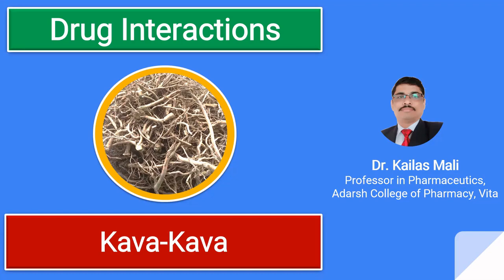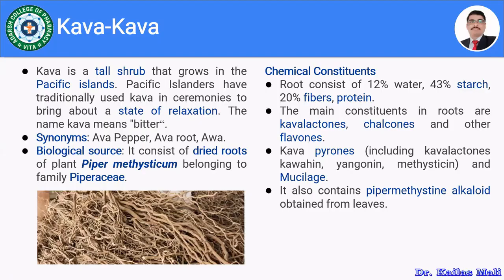One of the drugs we'll discuss is kawakawa. Kawakawa is a drug obtained from Piper methysticum and it is grown in the Pacific Islands. Pacific Islanders drink a beverage prepared from kawakawa for the state of relaxation, similar to alcohol. Kawakawa means 'the beater' and it is a tall shrub that grows in the Pacific Islands, traditionally used in ceremonies to bring about relaxation.